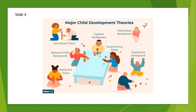Developmental psychologists strive to answer such questions, as well as to understand, explain, and predict behaviors that occur throughout the lifespan. In order to understand human development, a number of different theories of child development have arisen to explain various aspects of human growth. Child development that occurs from birth to adulthood was largely ignored throughout much of human history. Children were often viewed simply as small versions of adults, and little attention was paid to advances in cognitive abilities, language usage, and physical growth during childhood and adolescence. Interest in the field finally began to emerge early in the 20th century, but it tended to focus on abnormal behavior. Eventually, researchers became increasingly interested in typical child development as well as the influences on development.